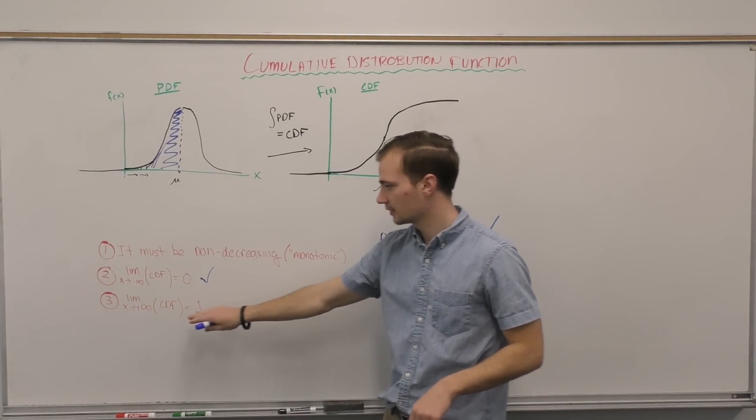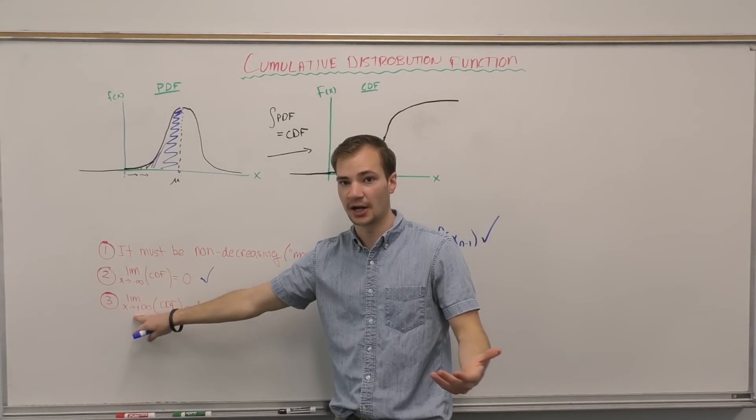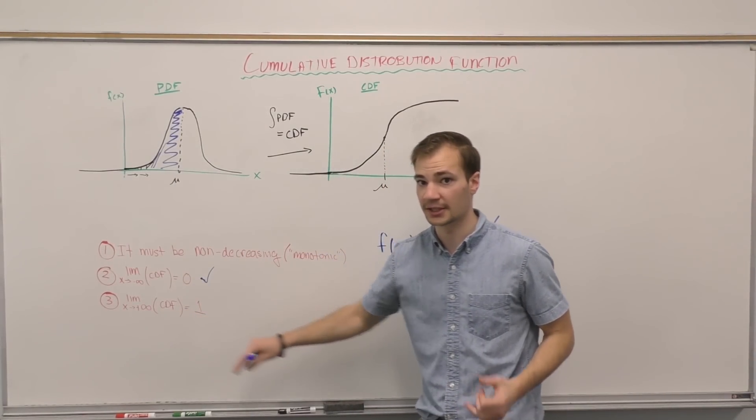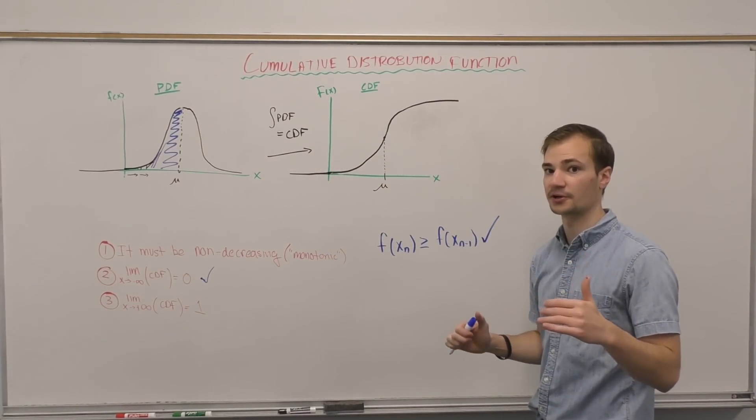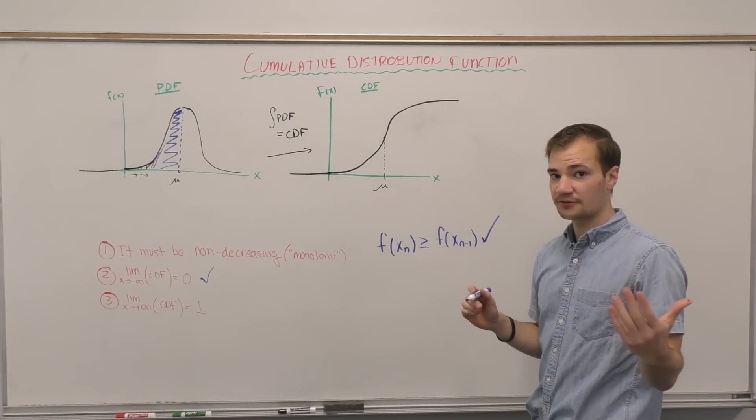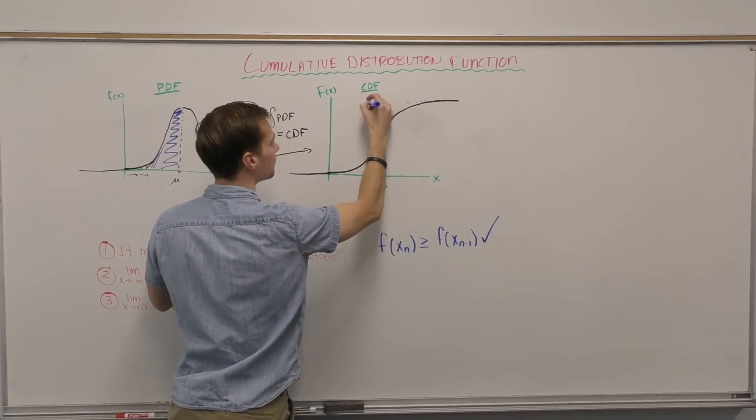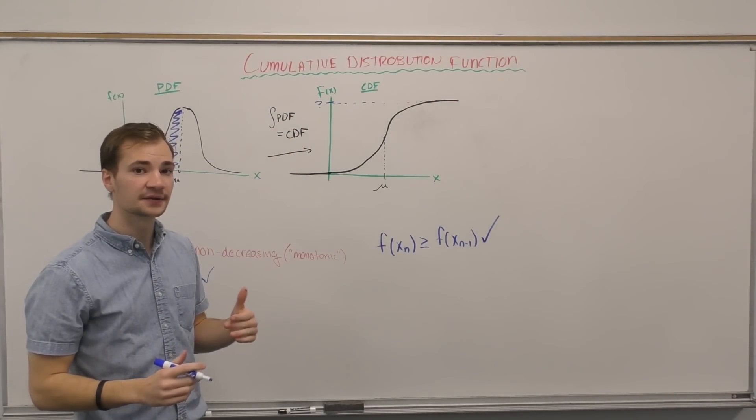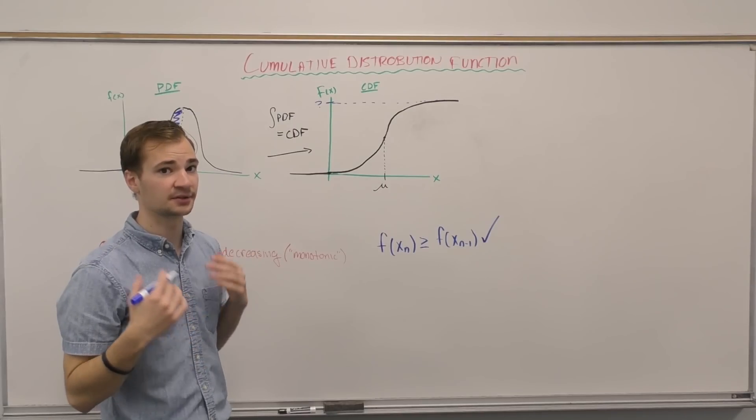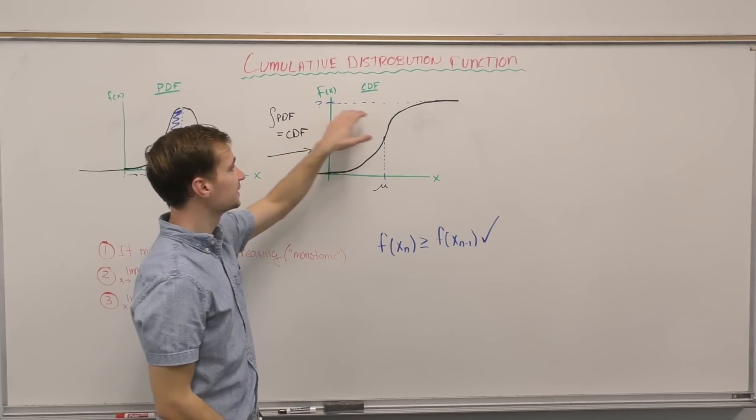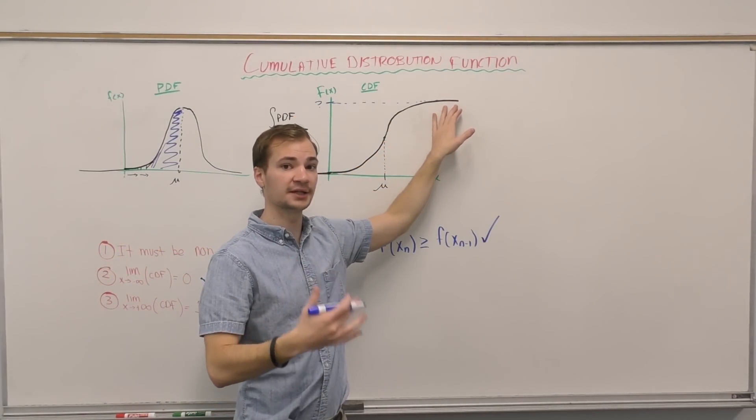Now the third and final truth. The limit as x approaches positive infinity equals one. And this is another really important part of CDFs. We said we can never have a probability greater than one. What will be the value? What is this value here? And the answer will always be one. Once it hits this point, there's no more increasing.